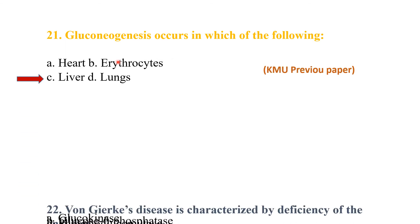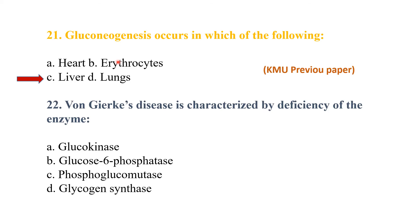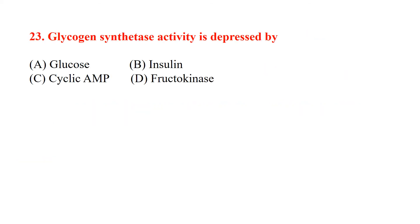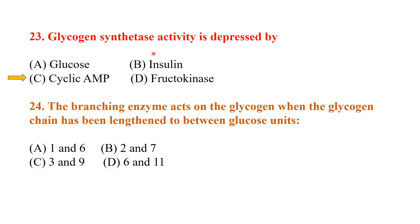Von Gierke's disease is characterized by a deficiency of the enzyme glucose-6-phosphatase. Cyclic AMP depresses the activity of glycogen synthetase.